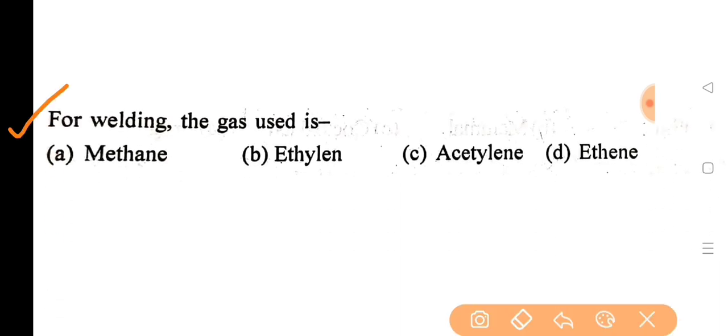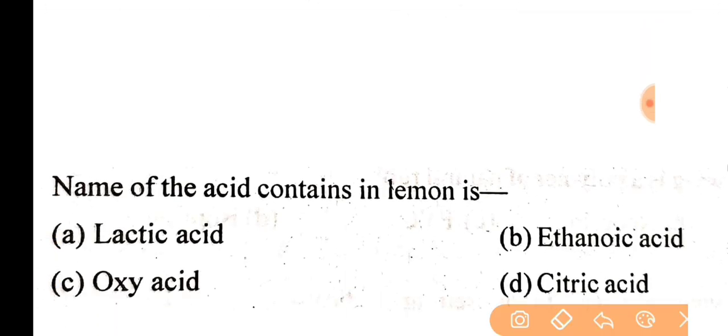Next question: for welding, the gas used is? Correct answer is option C, acetylene. Next question: name of the acid contained in lemon is? Correct answer is option D, citric acid.